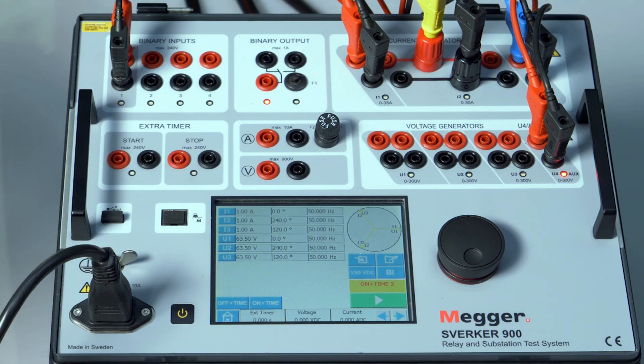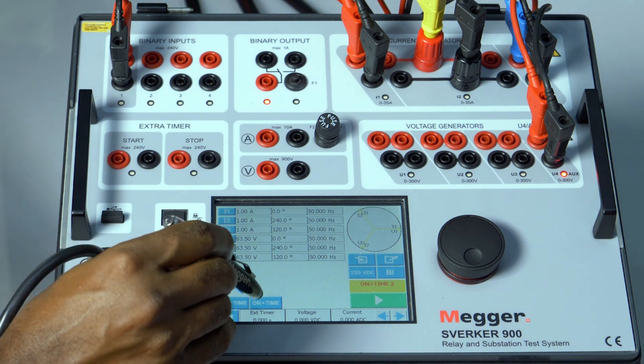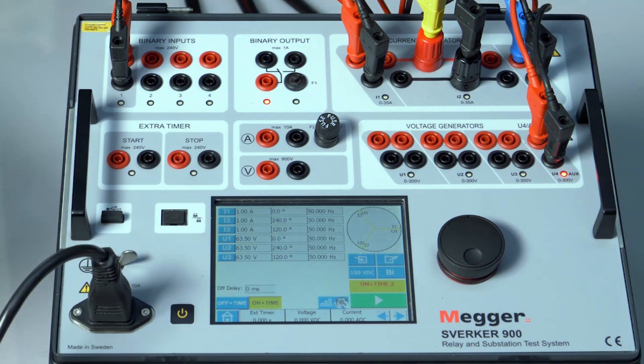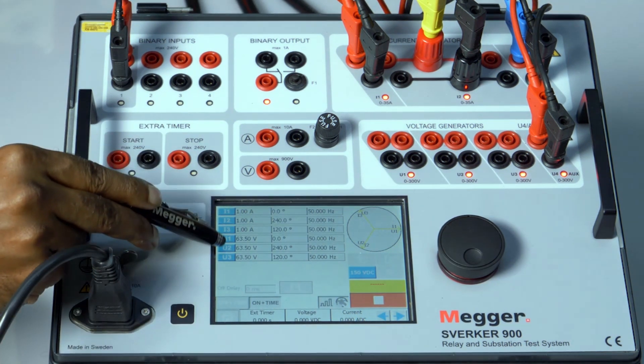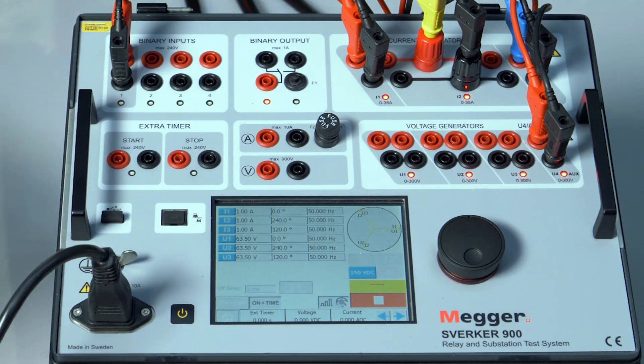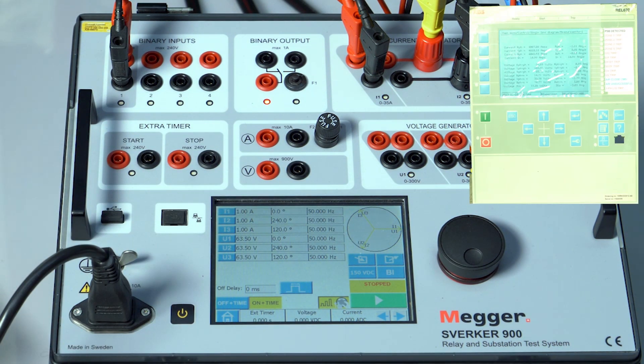IDMT automatic plotting multiple timing test curve for ABB and Siemens relays. To test multiple timing, we have to press the on plus time button, then press this icon and press the play button. These values will not be injected when we press the play button. Let's stop it. We have connected only the current to the relay, the voltage is removed, so let me remove the voltage section.